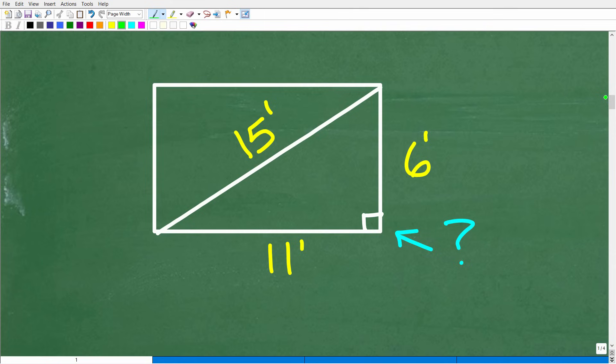So here is the room in question. So the dimensions are, we got six feet for the width, 11 feet for the length, and the diagonal across the room is 15 feet.